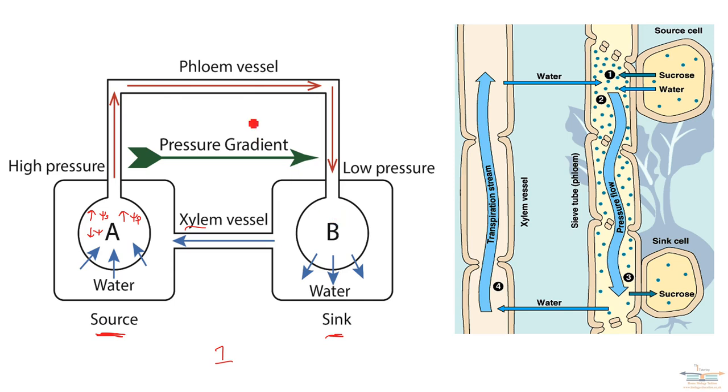Now, we do need a pressure gradient. So if we've got a high pressure in the source, we've got to have a low pressure in the sink. So examples of sinks will be the roots, that's where sugars will be stored as starch. You could have the fruit, that's where sugars are stored in the fruit.